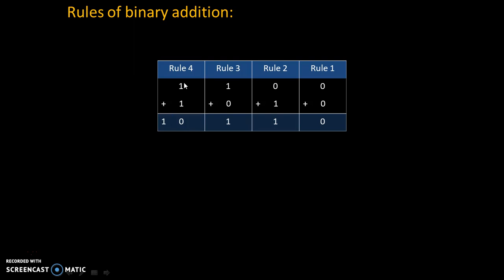Please note, in decimal, 1 plus 1 is 2. And in binary, 2 can be written as 10. That's why 1 plus 1 is 2 in decimal, but that 2 can be written as 10 in binary.